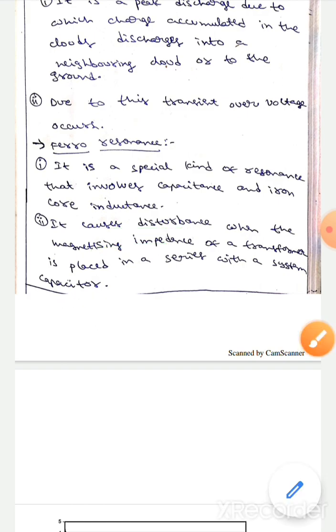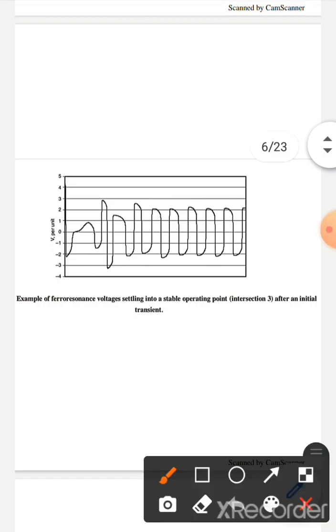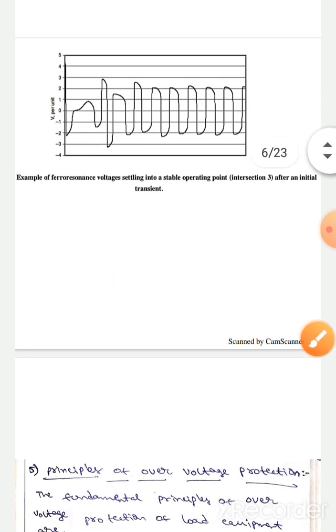This is an example of ferro resonance: ferro resonance voltage settling into a stable operating point after an initial transient. This is the diagram.